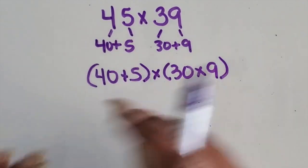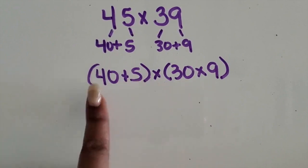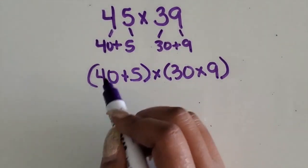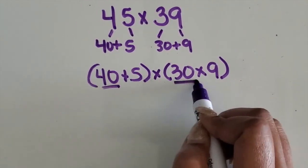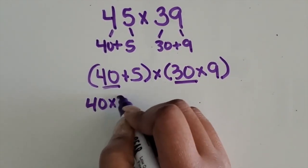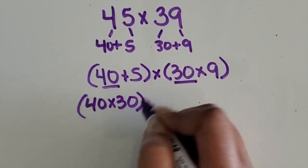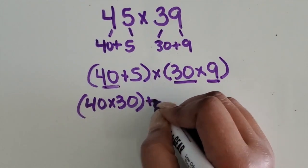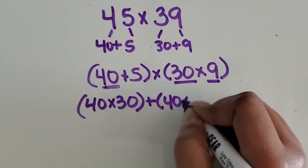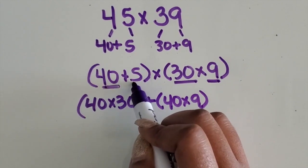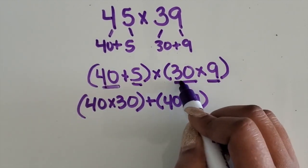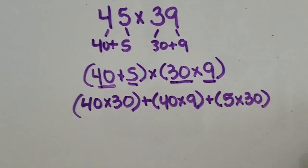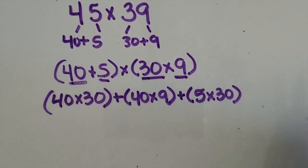Then I need to distribute each part, or each factor, to multiply times another factor. So we're going to take this 40 and multiply it by 30. Then use that same 40 and multiply it by 9. Now we're going to take the 5 and multiply it by 30, and then take the 5 and multiply it by 9.